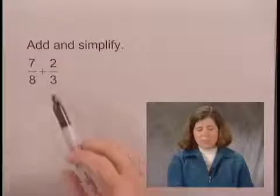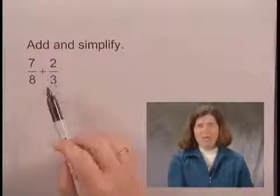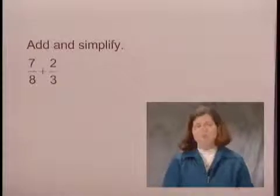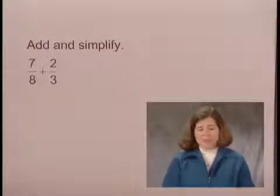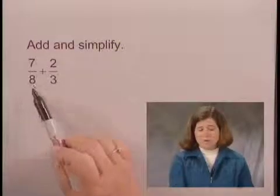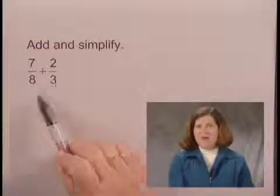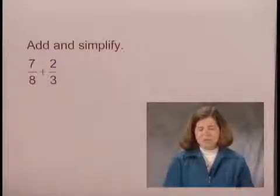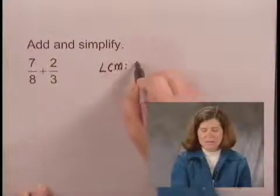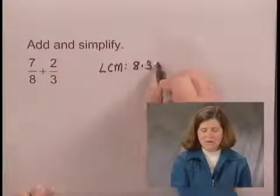First of all, 8 and 3 are the numbers that we're looking to find a common multiple for. We're looking for the least common multiple of 8 and 3. If you'll notice, 8 is 2 times 2 times 2, and 3 is a prime number. They have no prime factors in common. So the least common multiple is going to be their product, 8 times 3, or 24.